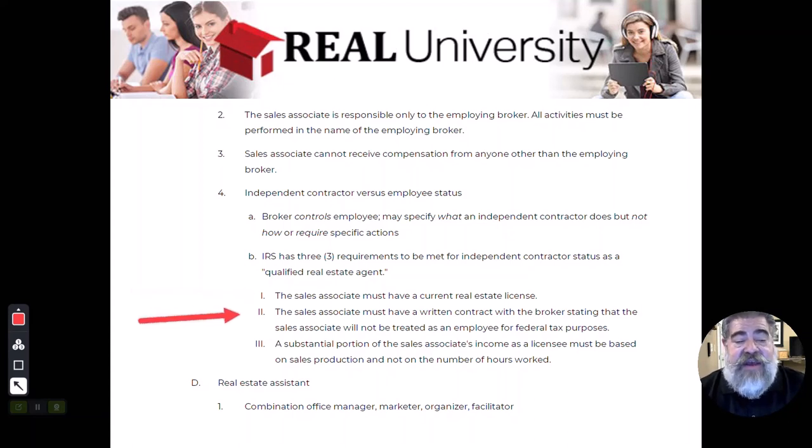You must have a written contract with your broker stating that you will not be treated as an employee. When you go to work for any company, you will sign an independent contractor. Our independent contractor says basically this, you abide by all the rules. I abide by all the rules and I'll pay you what you earn. And I will also not pay any of your taxes, any of your car insurance, any health insurance. So our contract that you will sign with the moduling group specifically spells out that you are not being treated as an employee. Every brokerage will do this. And why? Because of these rules, you have to have a signed contract.